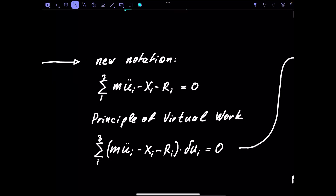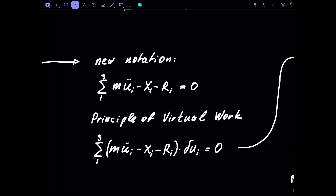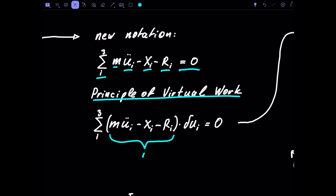To simplify notation, instead of writing x-double-dot and y-double-dot separately, we use a sum from 1 to 3 over the three directions: mass times acceleration minus applied force minus reaction force in each direction must equal zero, since they are in equilibrium. The principle of virtual work considers this force expression multiplied by a possible displacement. Force times displacement is work, and since we use a virtual displacement, we get virtual work.